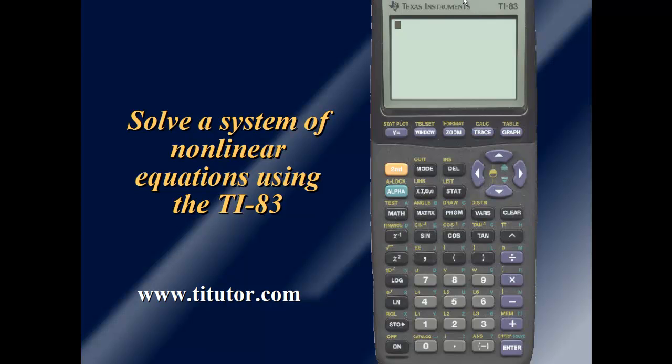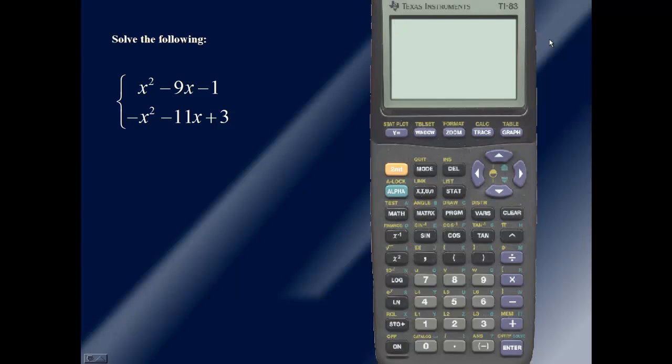Solve a system of non-linear equations using the TI-83 calculator. For this video and videos similar to these, visit the website www.titutor.com. Let's solve the following system of non-linear equations: x squared minus 9x minus 1 and negative x squared minus 11x plus 3. We will solve a system of non-linear equations by using the intercept method for the TI-83.